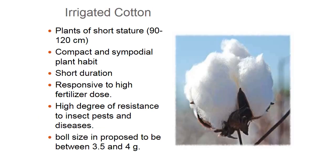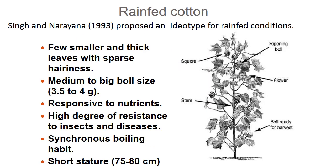For irrigated cotton specifically: short stature of 90–120 cm, compact sympodial plant habit, short duration, responsive to high fertilizer dose, high resistance to insects and pests, and boll size proposed to be 3.5–4 grams. For rain-fed cotton, Singh and Narayan in 1993 proposed an ideotype with few smaller and thick leaves with sparse hairiness, medium to big boll size of 3.5–4 grams, response to nutrients, high resistance to insects and disease, synchronous balling habit, and short stature of 75–80 cm.